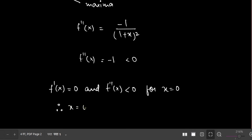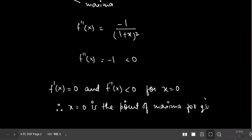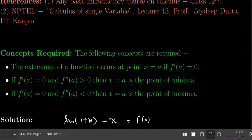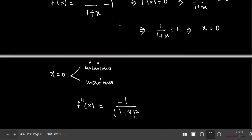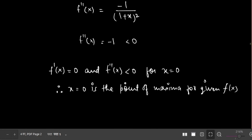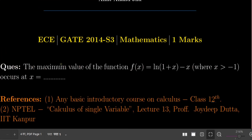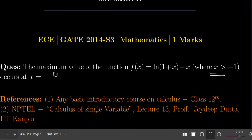Therefore, x = 0 is the point of maxima for the given function f(x) = ln(1 + x) - x. The derivative is zero and the double derivative is negative at x = 0, confirming it is a maximum. We also verify that x = 0 is within the domain x > -1. So the final answer is x = 0.